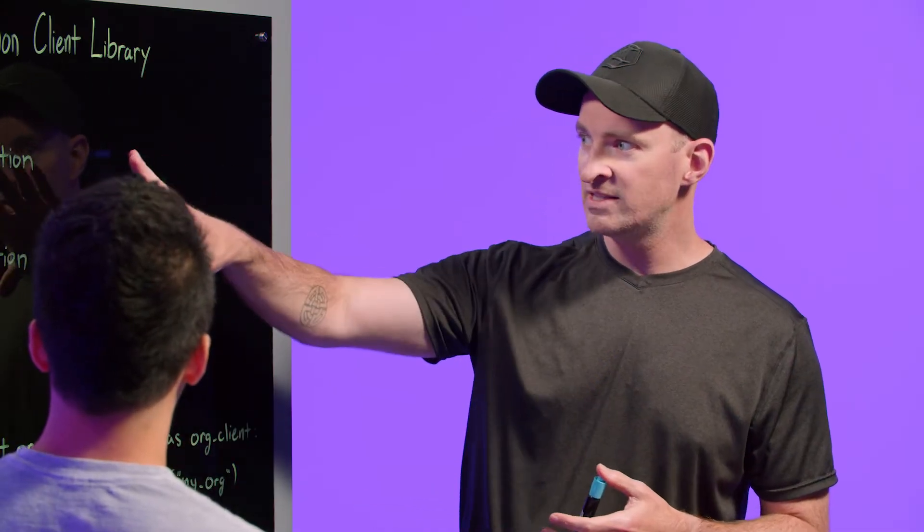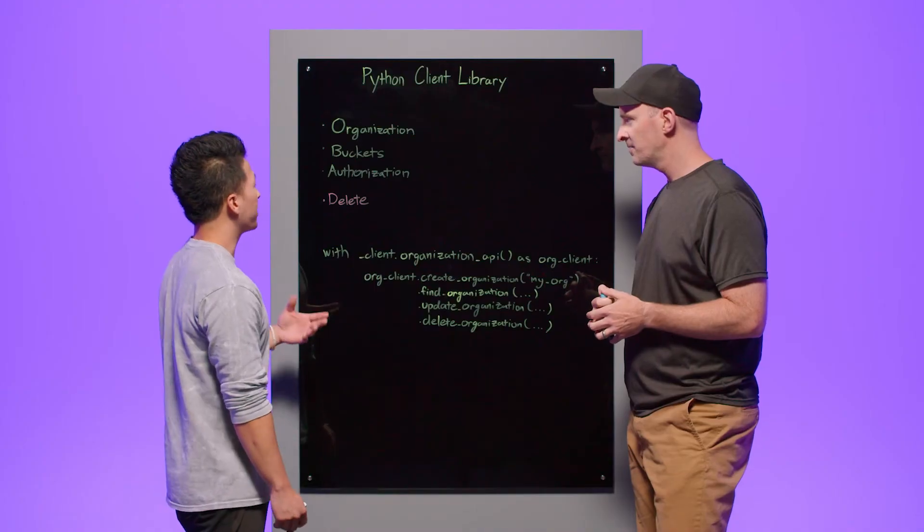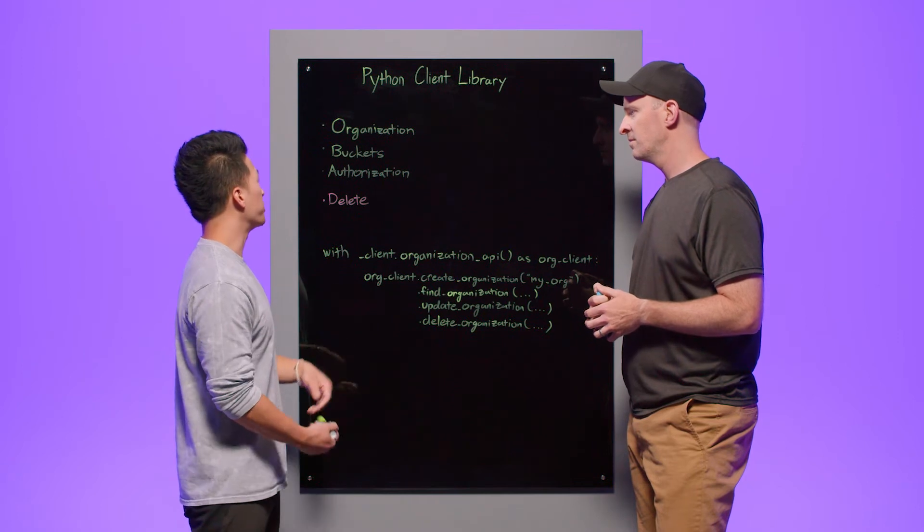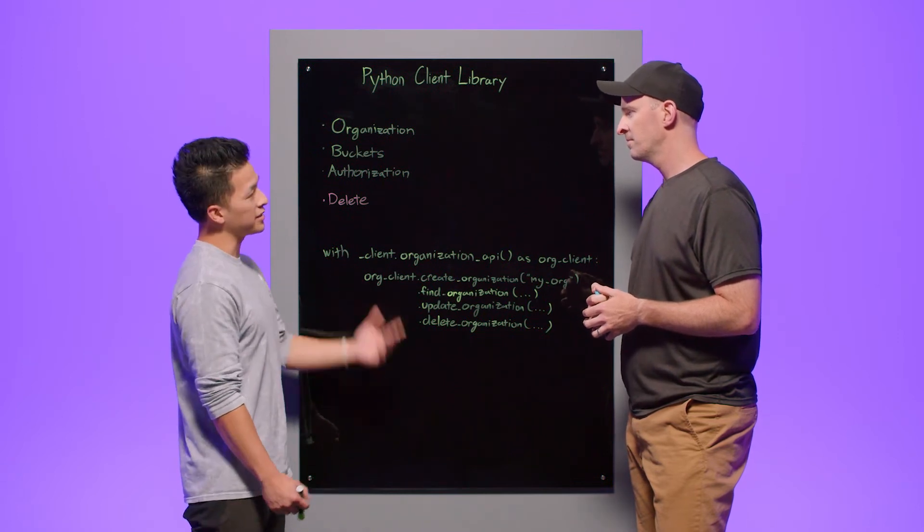When exactly would you need to use this? Typically you would have an organization or a bucket already created for you when you first start InfluxDB — this would be done through the UI. But let's say later down the line you have an application and you want to spin up ten servers with ten instances of InfluxDB. Instead of going through the UI and doing this manually one by one, you would use the API to programmatically automate this.